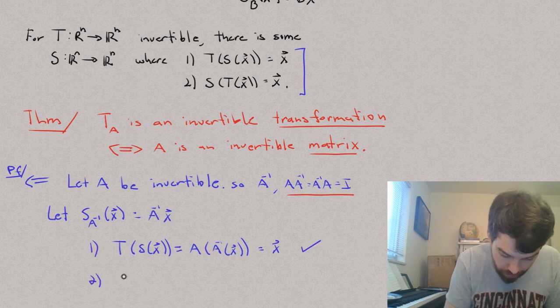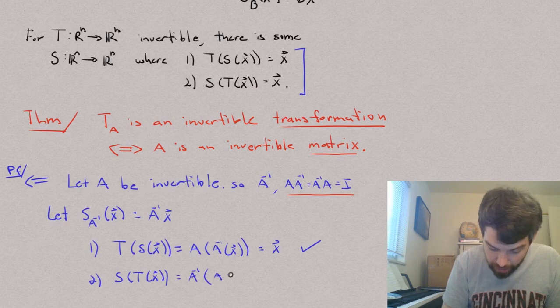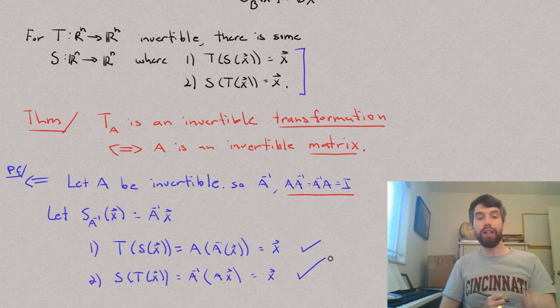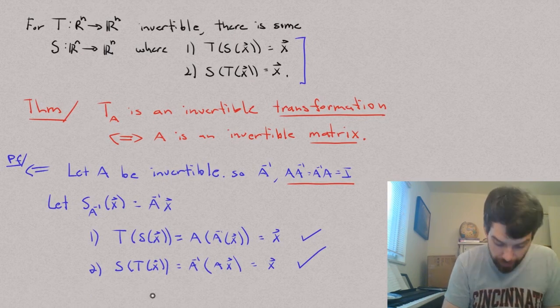I have those and the second is going to work much the same way, S of T of X. Well, the S is defined to be multiplication by A inverse. The T is defined to be multiplication by A. And this is indeed just going to be equal to vector X as well. And so, what do I have it? I therefore have concluded that my TA is going to be invertible.